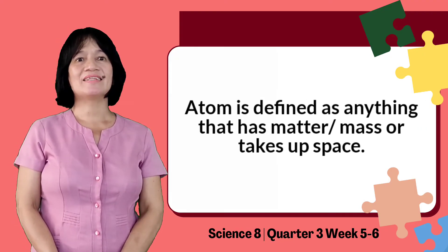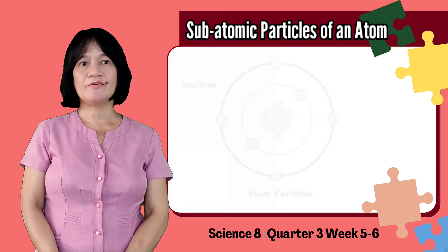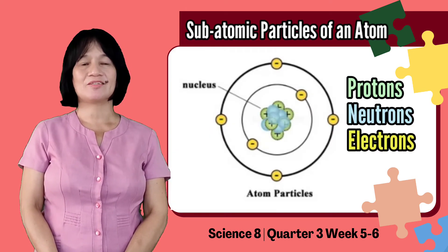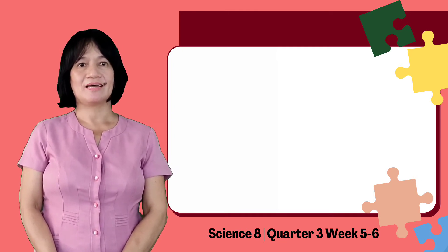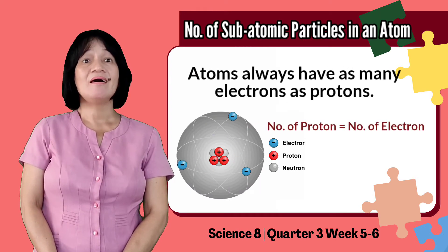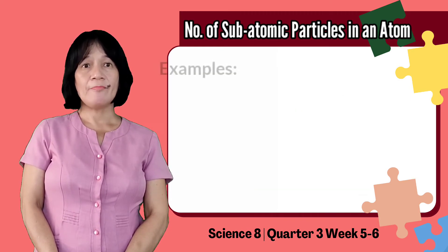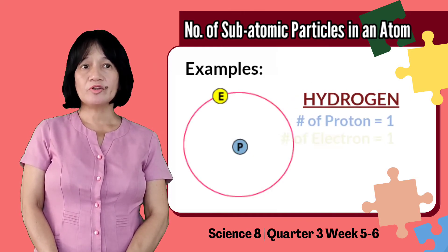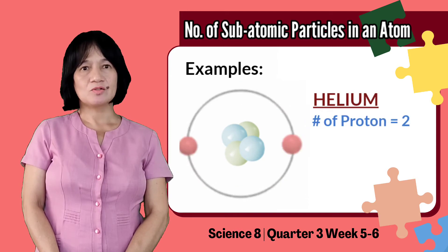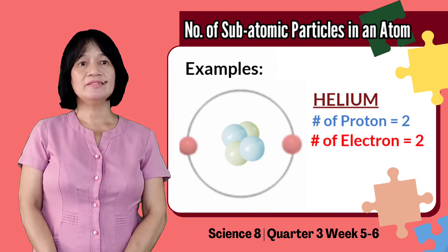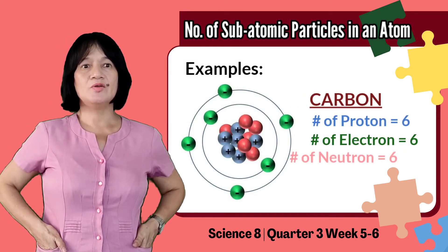Atoms are defined as anything that has mass or takes up space. These are made of subatomic particles: protons, neutrons, and electrons. So, let us now focus on these subatomic particles. Atoms have as many electrons as protons, and usually have about as many neutrons as protons. For example, hydrogen has one proton, one electron, with no neutron. Helium has two protons, two electrons, and two neutrons. Carbon has six protons, six electrons, and six neutrons.